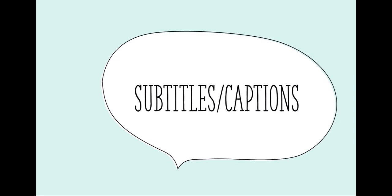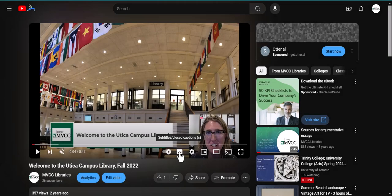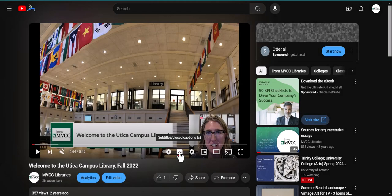If you are like me, you might like to read what is being said while you listen to better understand the content. Clicking the CC button in the bottom right of the video turns on closed captioning. What the speaker says will appear at the bottom of the screen.